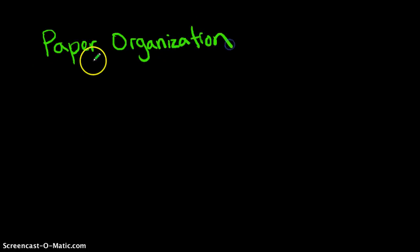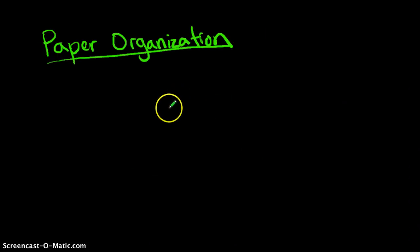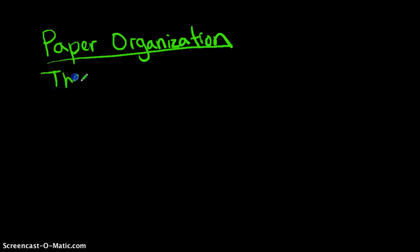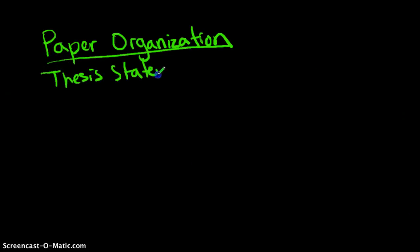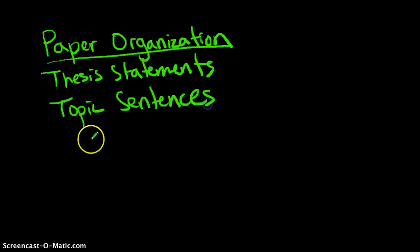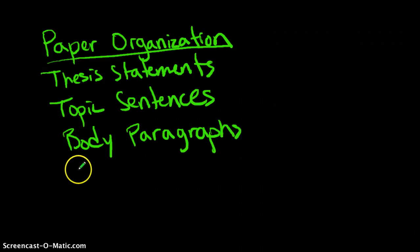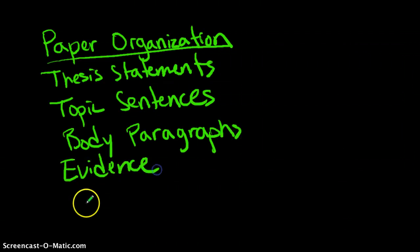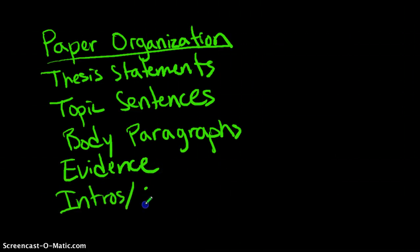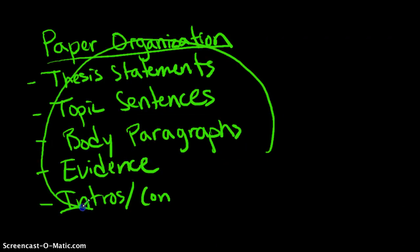I want to review overall paper organization first, and then after we spend some time on that, we can start breaking it down by the different pieces — thesis statements, topic sentences, which we've already talked about a little bit, body paragraphs, and then evidence. After that, the book goes into introductions and conclusions, which we've already spent a little time on. First, I want to show you a roadmap of how all of these things fit together in your paper.